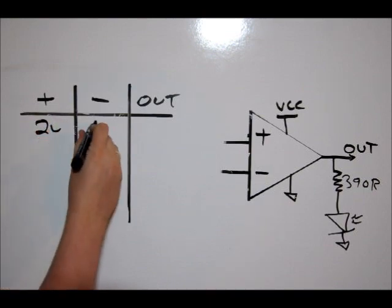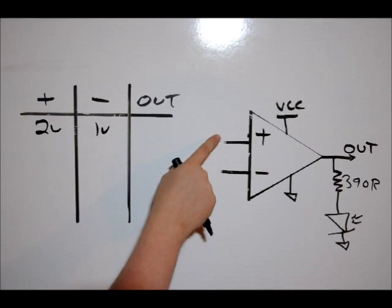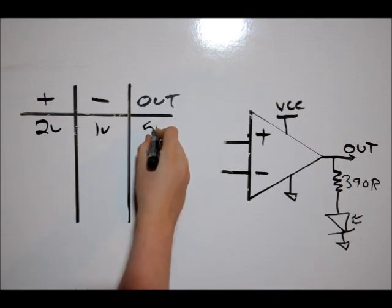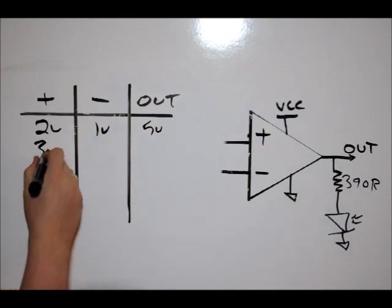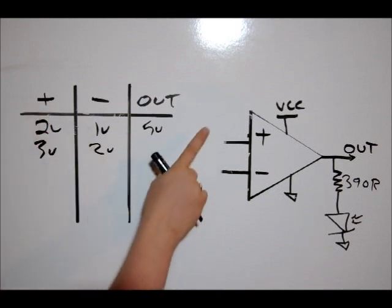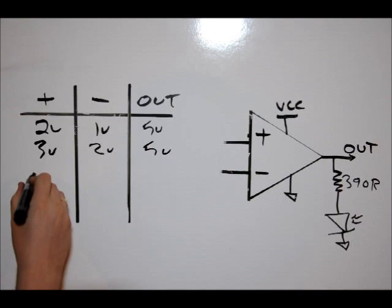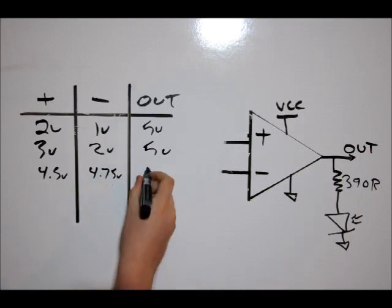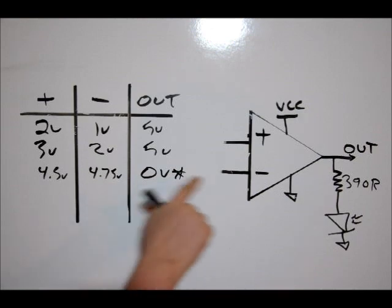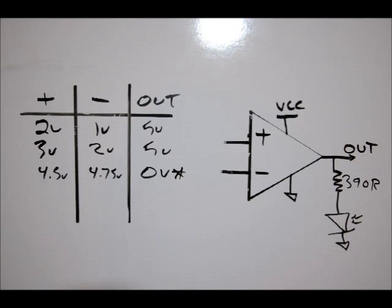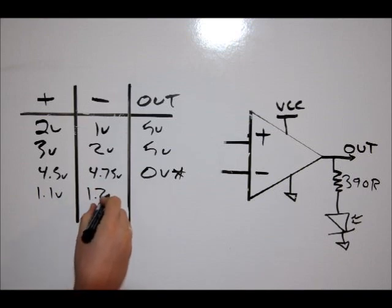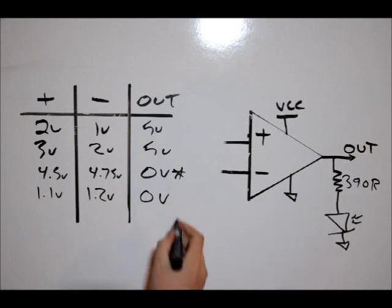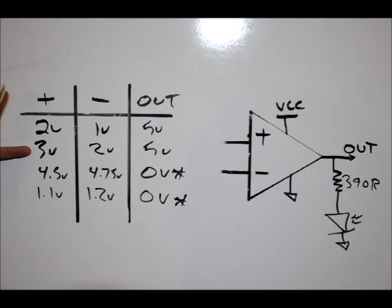Let's try this. 2 volts, 1 volt. The voltage at the positive input is higher than the voltage at the negative input, so our output is 5 volts, or VCC. Let's try 3 volts and 2 volts. What do you think? Positive is higher than negative, 5 volts. Let's try 4.5 volts and 4.75 volts. Because the voltage at the negative input is higher than the voltage at the positive input. So what about 1.1 volts and 1.2 volts? This is what we'll see at our output.